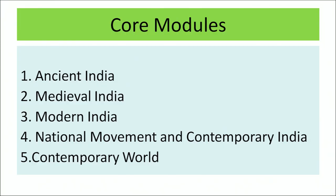The curriculum has 5 core and 1 optional module. The core modules are: Module 1 Ancient India, Module 2 Medieval India, Module 3 Modern India, Module 4 National Movement and Contemporary India, and Module 5 Contemporary World. For the optional module, there is a choice between Evolution of State or Culture in India, and the learner has to choose any one of these two modules.